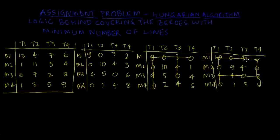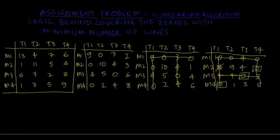In order to do the assignment, we follow the simple rule: first assign the single-zero row. This row has a single zero, so I assign the third task to the third machine. This row has a single zero, so I assign the first task to the fourth machine, which means I can't assign the first task to the second machine. Now this is a single zero, so I assign the fourth task to the second machine, then assign the second task to the first machine.